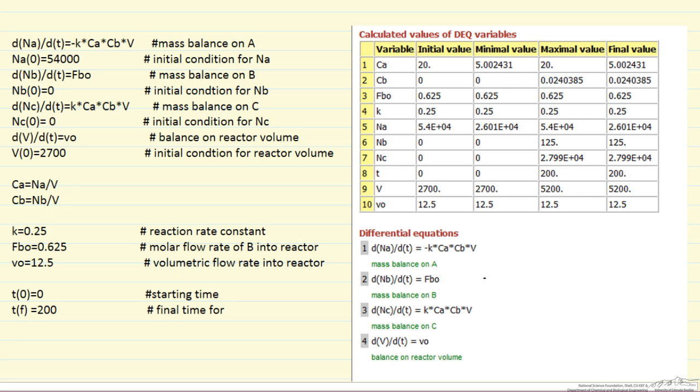What I'm showing you on the left is a POLYMATH program, on the right is the output. In the left column are the differential equations at the top, with their initial conditions immediately below them, using the POLYMATH format with parentheses around the units in the derivative term. Then our concentration of A and B, our constants, our starting and finishing integration time, and everything over here are just comments.